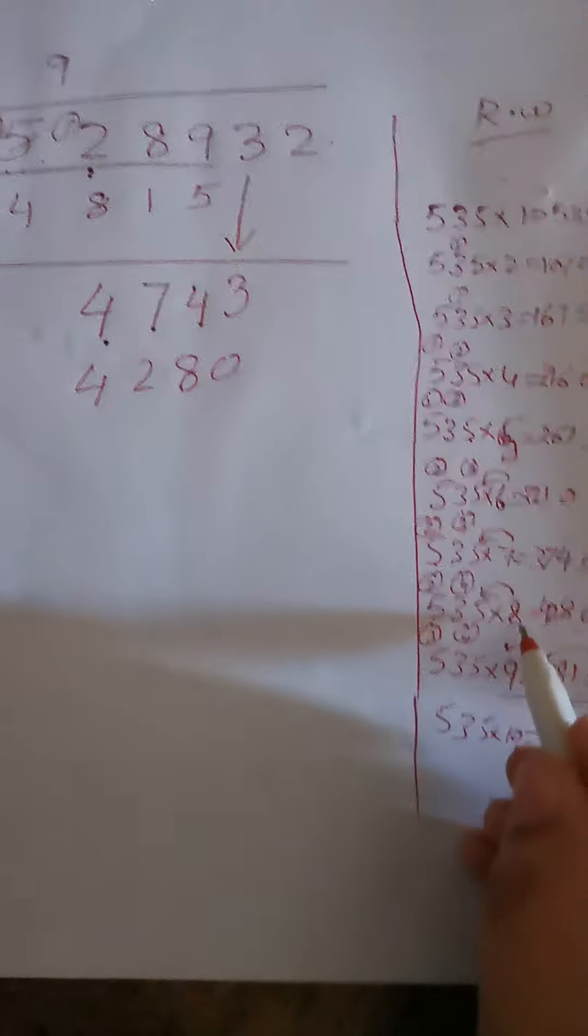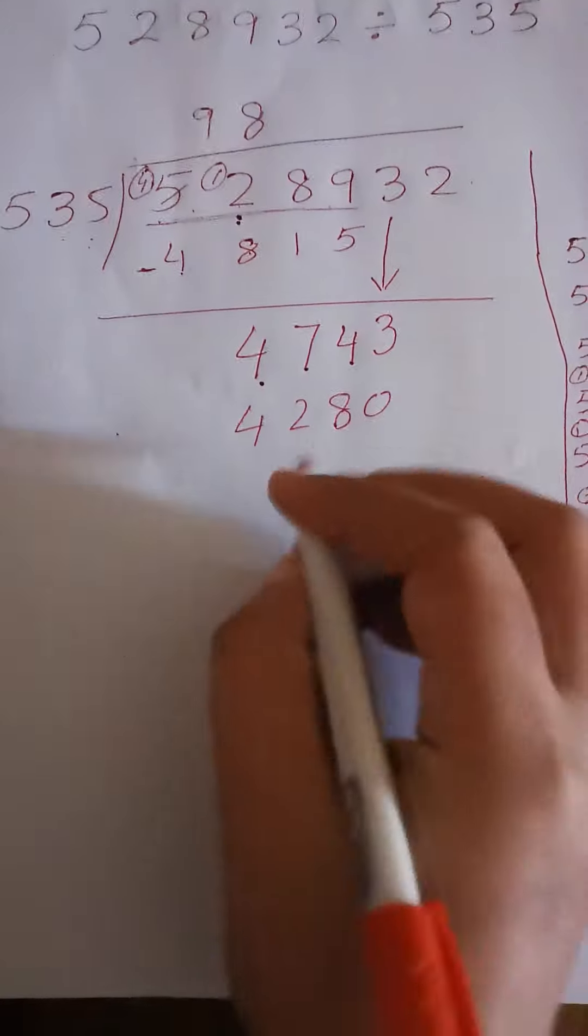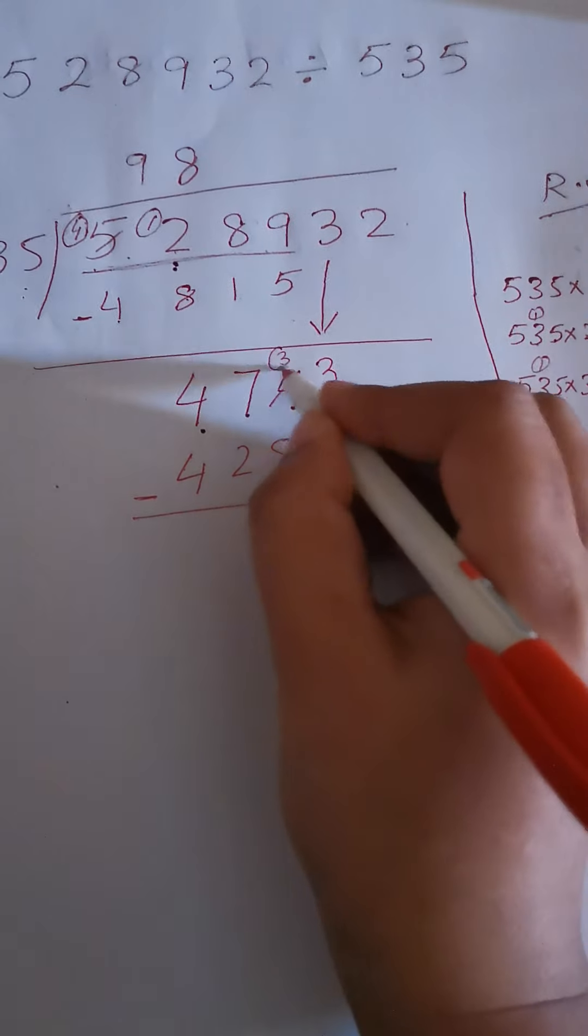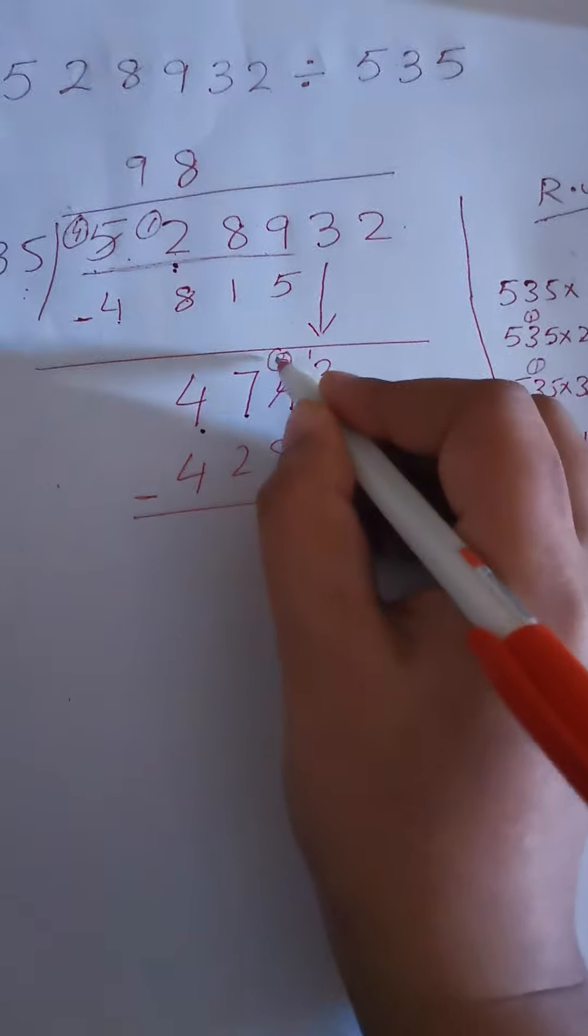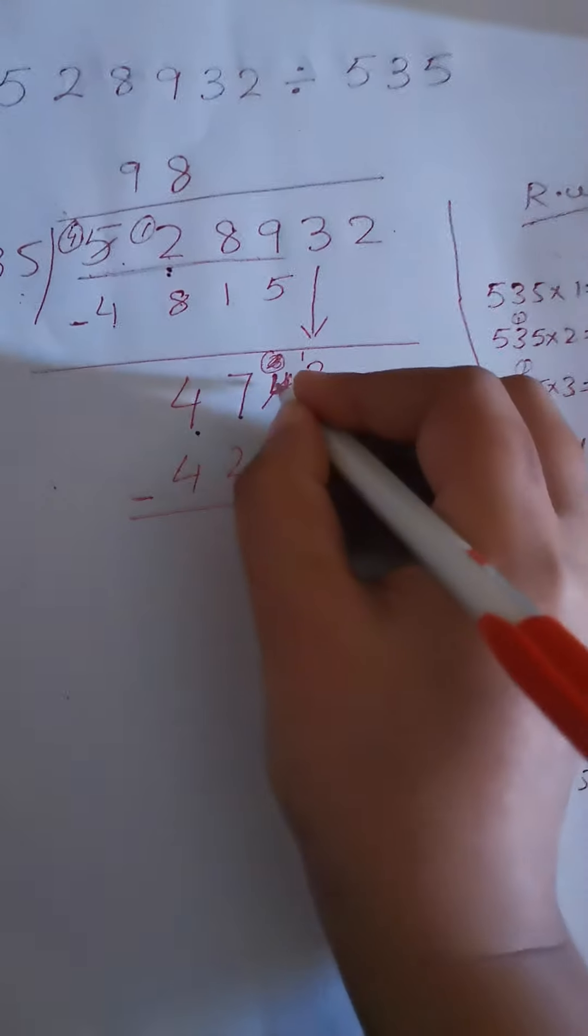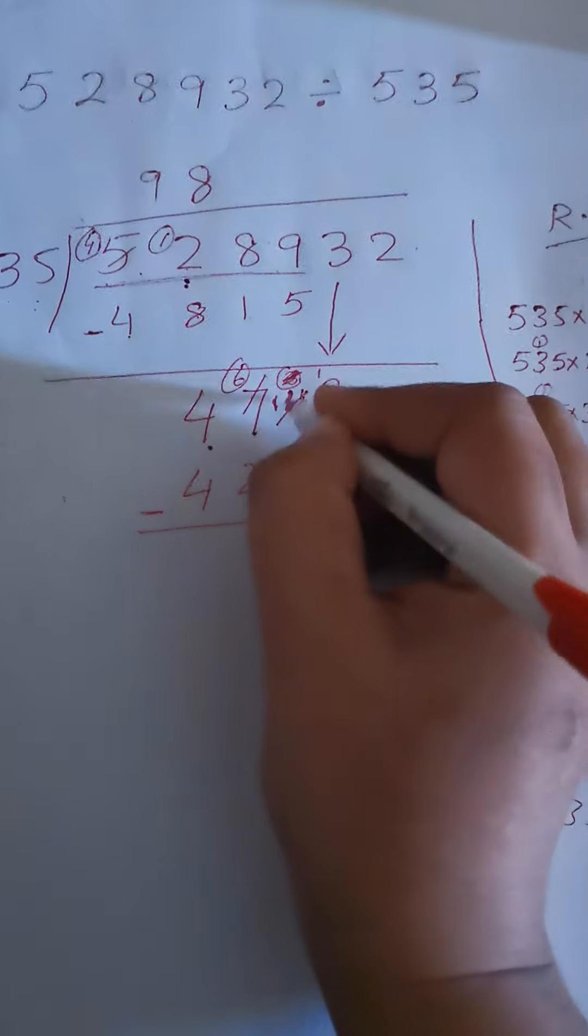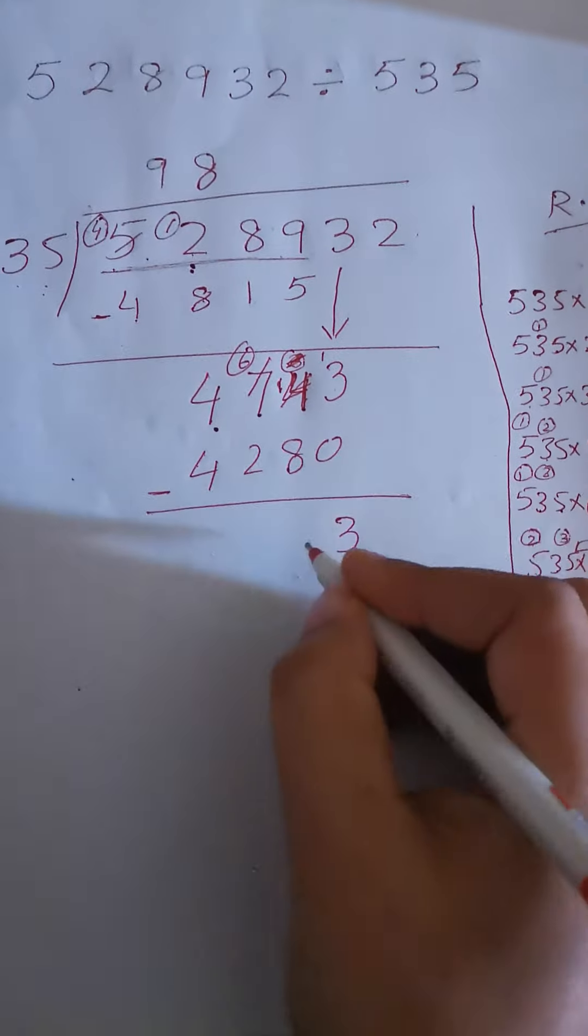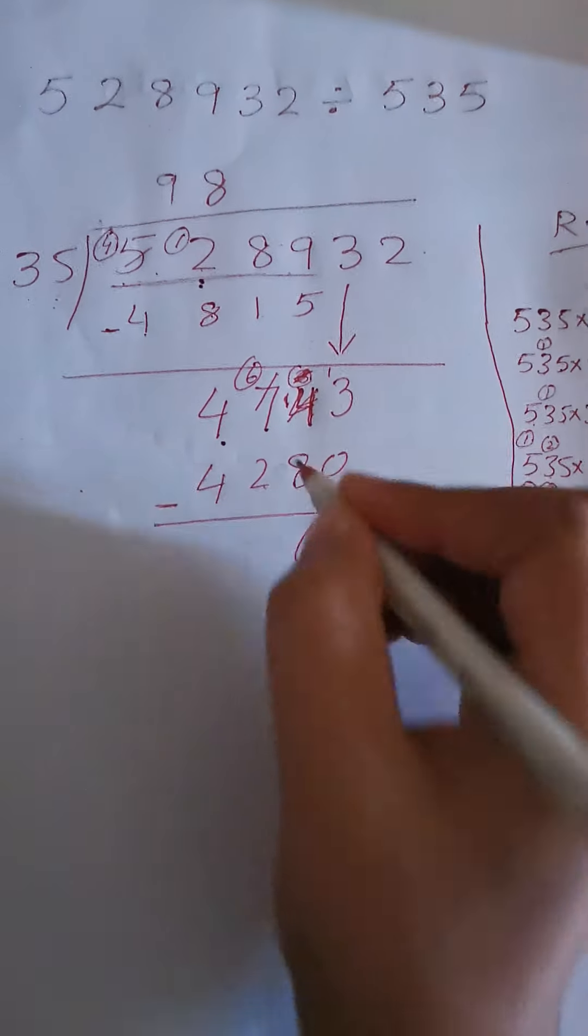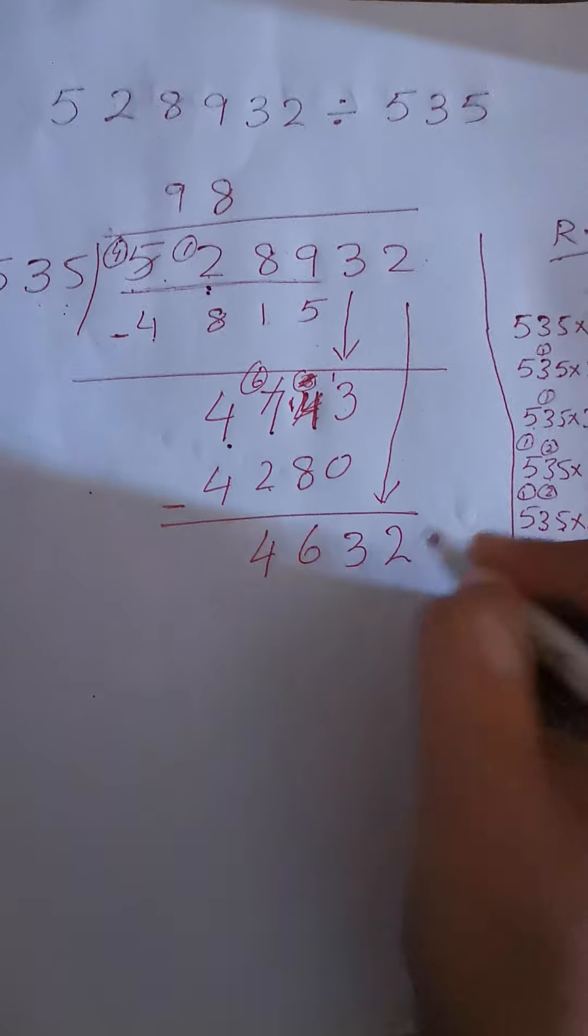We multiplied with 8, so 8 goes on top. Then we subtract. 3 minus 0 is 3, but 4 minus 8 needs a carry. Taking carry from 7, it becomes 6 and 14. 14 minus 8 is 6, 6 minus 2 is 4. We get 463. Now we bring down 2.